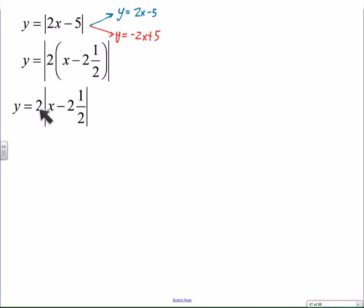I'm going to take that 2, move it out of the absolute values. And now I can identify the slopes just like before, plus or minus 2. This time, though, we're not moving to the left, we're moving to the right. And we're not moving right 5, we're moving right 2 and a half.